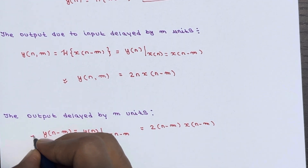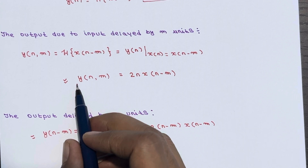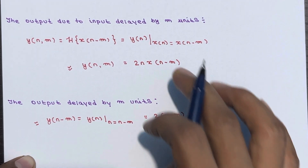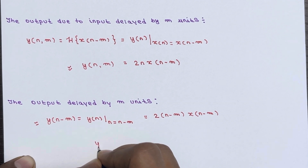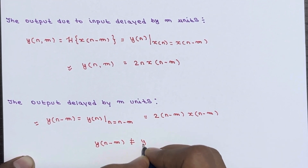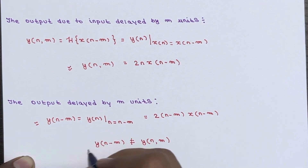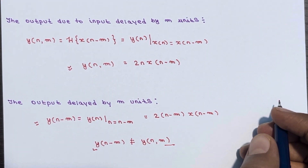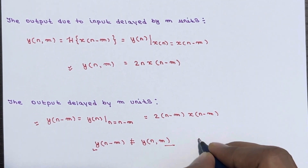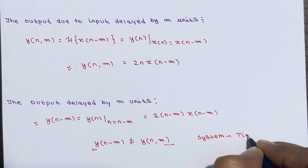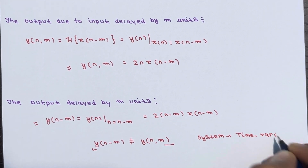We have calculated y(n, m) = 2n·x(n - m) and y(n - m) = 2(n - m)·x(n - m). These two are not equal. So y(n - m) ≠ y(n, m), meaning the output delayed by m units is not equal to the output due to input delayed by m units. Therefore, this system is a time variant system, because it does not satisfy the time invariancy condition.